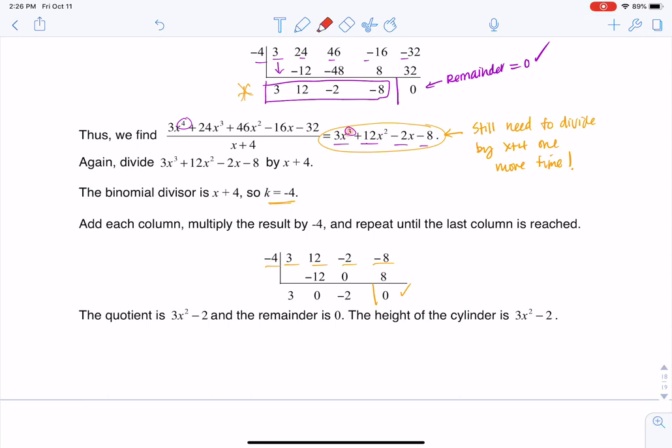Keep in mind here, I started with the cubic, so this polynomial, this 3 is going to be attached to a squared term. So that's where I'm getting 3x². There's 0x's and then -2. So that quotient has to be the height of my cylinder. All right, thanks so much everyone, bye.